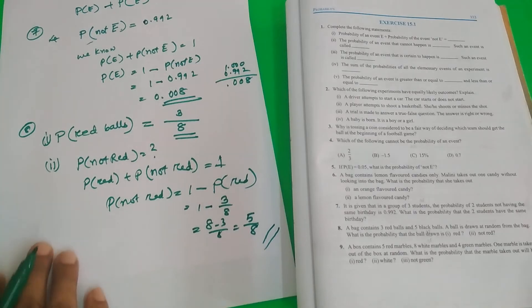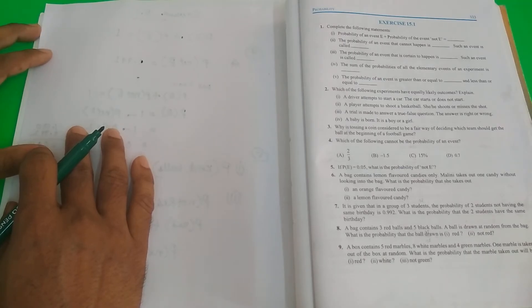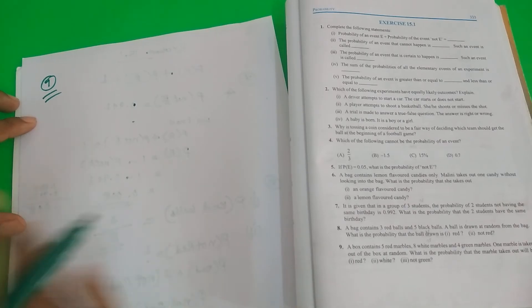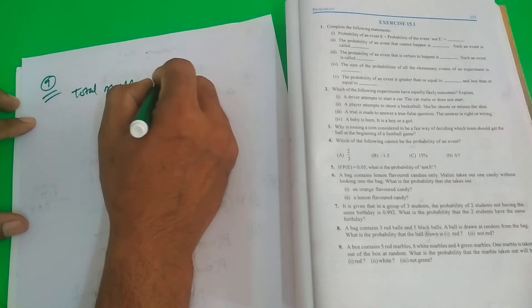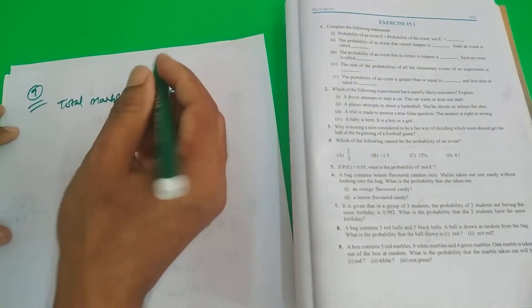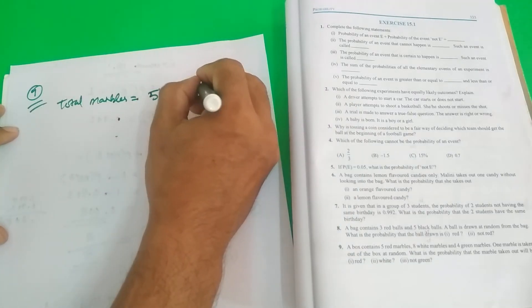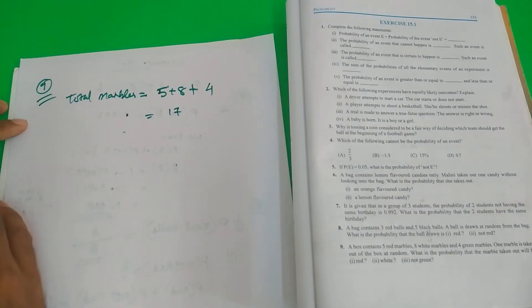Next, question number 9. A bag contains 5 red marbles, 8 white marbles, 4 green marbles. 1 marble is taken out of the box at random. What is the probability that the marbles taken out will be red, white and not green? This is question number 9. Firstly, we will see total number of marbles. Total marbles. How much it is? 5 plus 8 plus 4. I think this is 17. 17 is the total.